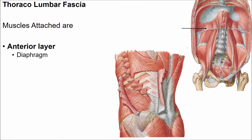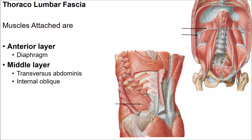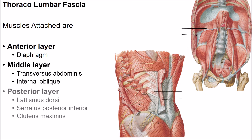The muscles attached to the thoracolumbar fascia include: from the anterior layer, fibers of the diaphragm arise from the lateral arcuate ligament. From the fusion of the anterior and middle layers, the transversus abdominis and internal oblique muscle fibers arise. From the posterior layer, the latissimus dorsi, serratus posterior inferior muscle, and a few fibers of the gluteus maximus muscle arise.